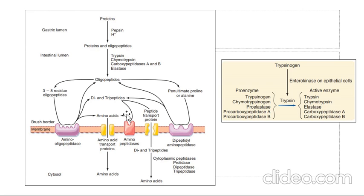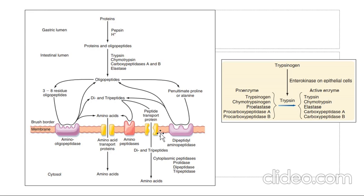Amino acids are absorbed either via sodium-dependent amino acid transport mechanisms or via peptidases that help transport amino acids into the cell. These amino acids are then transported into the blood.